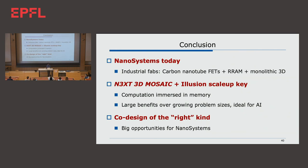So to conclude: I talked about the fact that you can build nanosystems today. Some of the nanotechnologies — carbon nanotube transistors, resistive RAM, monolithic 3D — actually work in actual industrial facilities, at Analog Devices and at Skywater, a commercial silicon foundry. This combination of NEXT 3D Mosaic and Illusion Scale-Up is, I believe, the key for the future — to achieve computation immersed in memory and get large benefits with growing problem sizes. And co-design of the right kind is a big opportunity for nanosystems. Thank you very much.